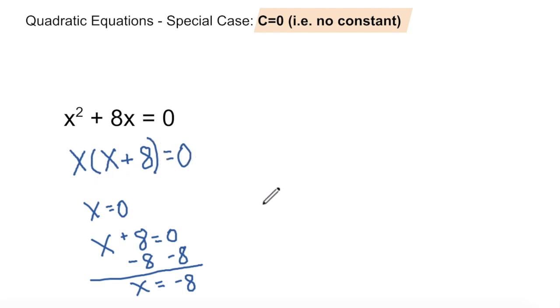So we find two solutions. We could write it in set notation as negative 8 comma 0, as our solution set.